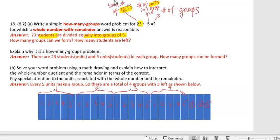Because 23 students corresponds to 23 units, and five units in each group means five students in each group. So the question would be, how many groups?